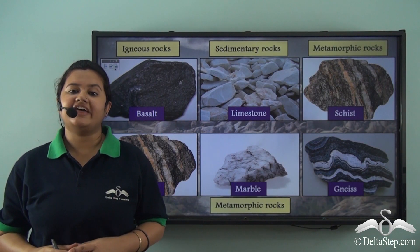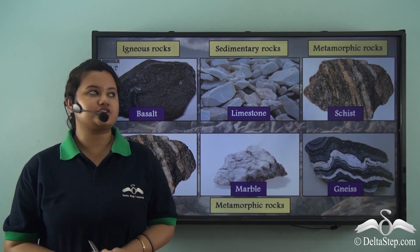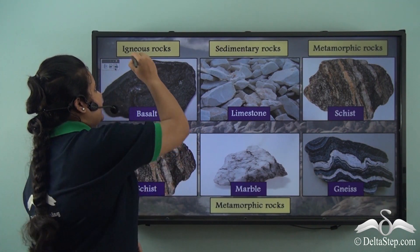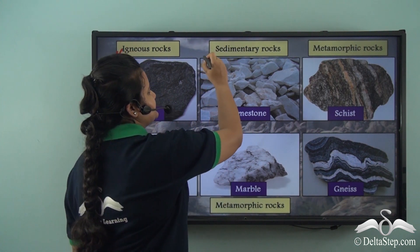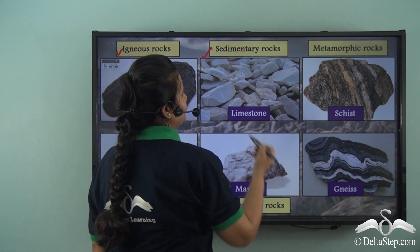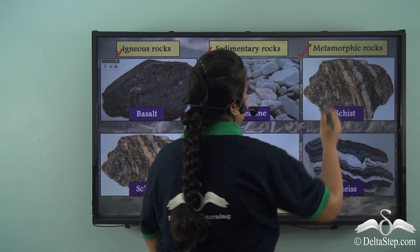We know there are three types of rocks: igneous rocks, sedimentary rocks, and metamorphic rocks.